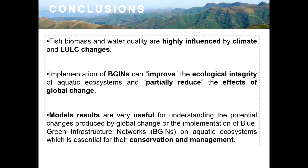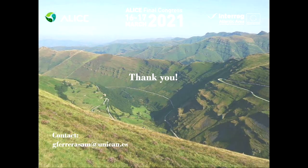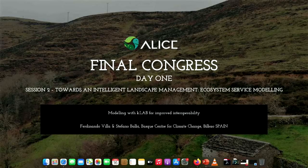In conclusion, fish biomass and water quality are highly influenced by climate and land use/land cover changes. The implementation of blue-green infrastructure can improve the ecological integrity of aquatic ecosystems and partially reduce the effects of global change. These model results are very useful for understanding the potential change produced by global change and the implementation of blue-green infrastructure on aquatic ecosystems, which is essential for their conservation and management. Thank you very much. Thanks a lot, Alexia, for your talk.